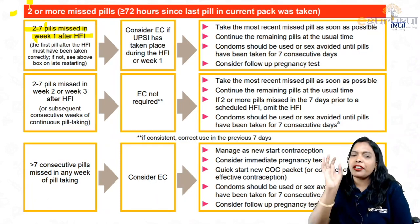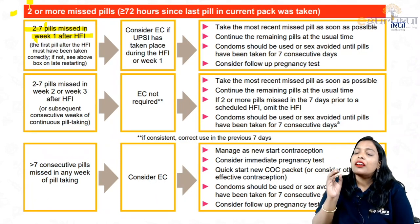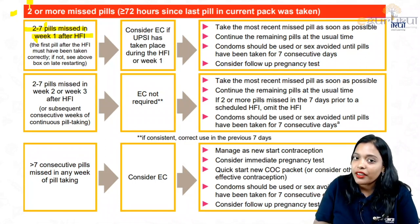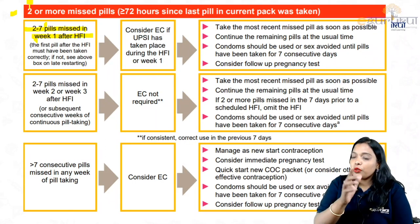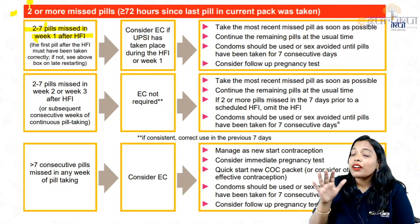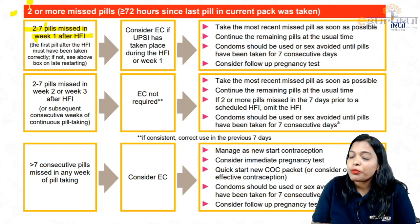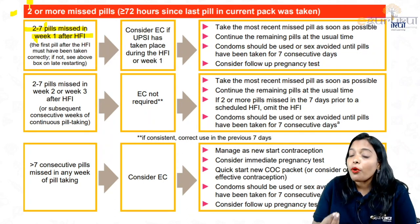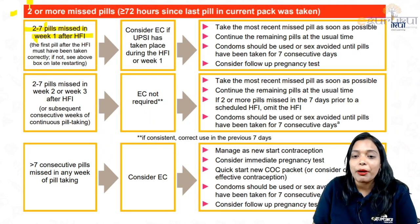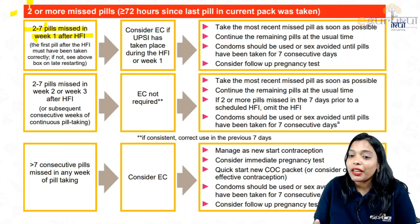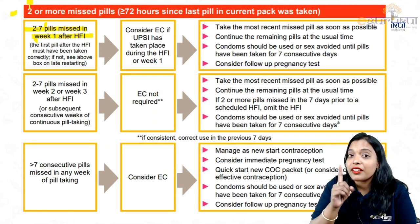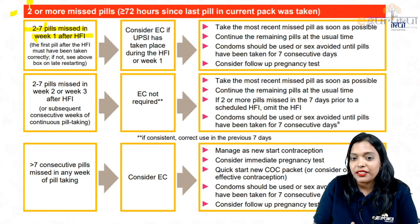To summarize: if she misses two to seven pills in the first week, consider emergency contraception if she had unprotected intercourse. Take the most recent pill as soon as she remembers. Continue the remaining pills at the usual time. Condoms should be used for the next seven consecutive days and consider a pregnancy test.